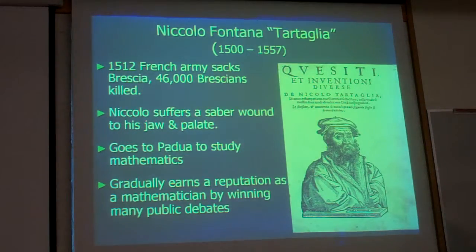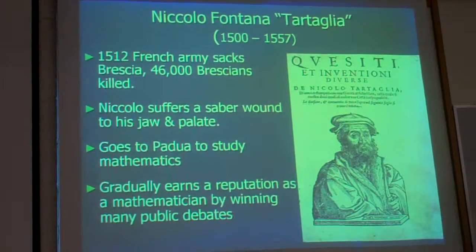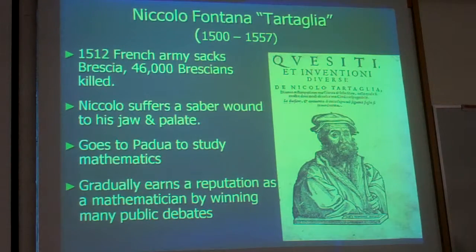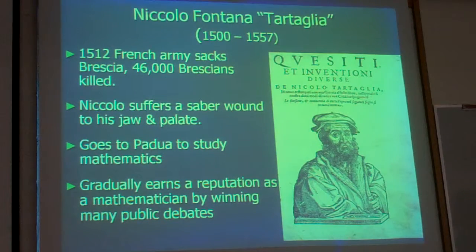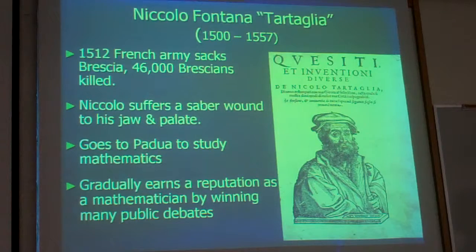Another person who comes into this story is Niccolò Fontana Tartaglia. Born in 1500, in 1512 when he was 12 years old, the French army came in and sacked his hometown of Brescia. The French army killed forty-six thousand residents — it was a massacre. The French army was paying them back for a previous defeat, making a lesson of people who dared to resist.